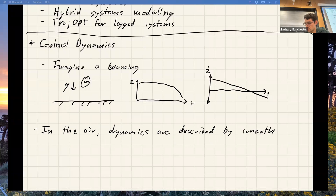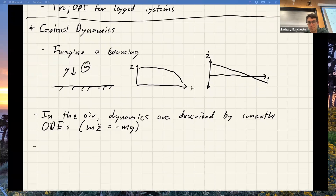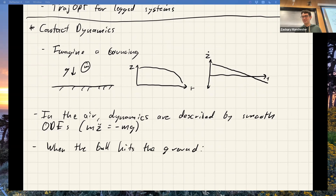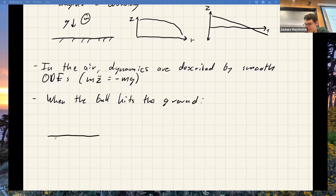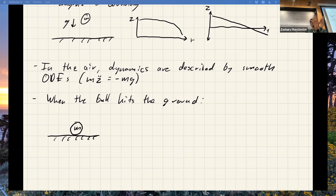In particular, we're talking about smooth ODEs, something like M*Z_double_dot equals minus MG. The M's cancel out. Now here's where it gets weird: let's look at when the ball hits the ground. Right around the instant it touches down, it's falling with some velocity V_minus just before it touches the ground. And if this thing bounces, there's some instant right after where it's going up — we'll call that V_plus.